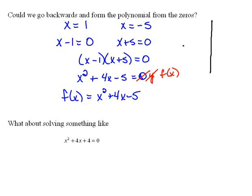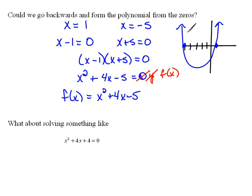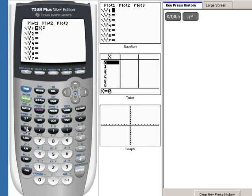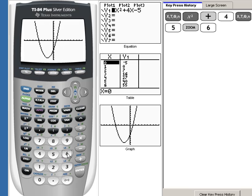If I have x-intercepts at 1 and negative 5, then my graph, because this has a positive a value, I know it's going to be opening up — so it's going to do something like this. I'm not sure exactly how low down this goes, but I do know it's going to give me a picture that looks something like that. Let's graph it on our calculator to double-check. In the y equals, I'm going to put in x-squared plus 4x minus 5, and then zoom 6 so we can see that. So that's exactly what we expected: x-intercept at negative 5 and at positive 1, and the graph opened up.